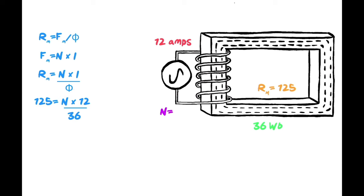So 125 is equal to N which I don't know, times I, divided by 36. 125 times 36 is equal to N times 12, cross multiply. Then I need to get 12 alone so I divide that out. So it's 125 times 36 divided by 12 gives me N, and N is 375 turns.